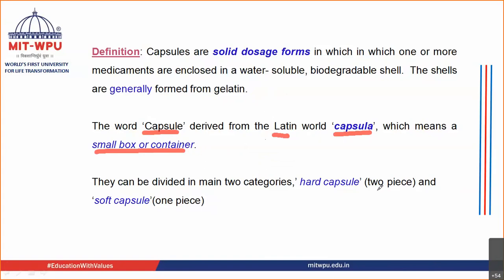Capsules are divided into two main categories: hard gelatin capsules and soft gelatin capsules. The major difference is that a hard capsule is made of two pieces — a cap and a body. A soft gelatin capsule, on the other hand, does not have a cap and a body; it is a one-piece unit.